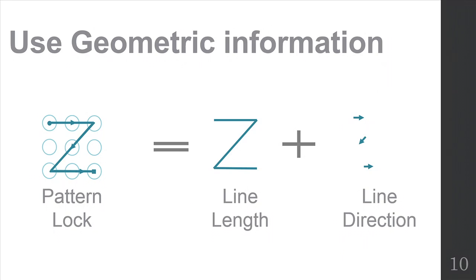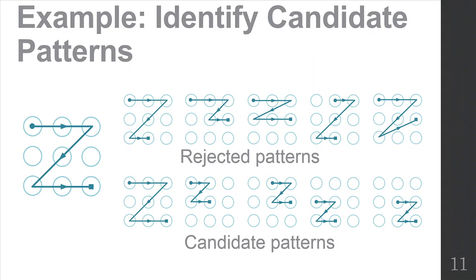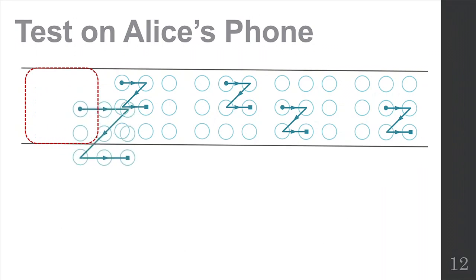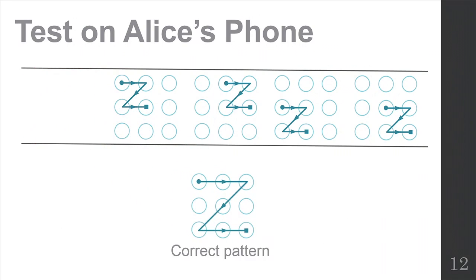So, inspired by this point, Bob can reject most of candidate patterns, and then finally Bob can get the five candidate patterns. For these rejected patterns, this shows the unmatched path comparing to the correct pattern. And then Bob can test one by one from the candidate patterns for confirming which one is Alice's pattern.